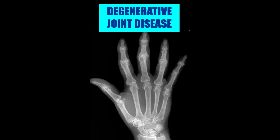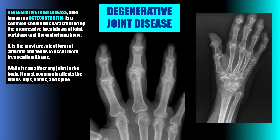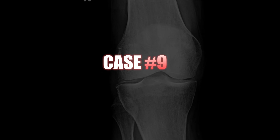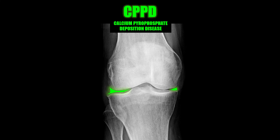Case number eight is a good example of degenerative joint disease. DJD in the hands typically involves the DIPs and PIPs while sparing the metacarpal-phalangeal joints. Degenerative joint disease, also known as osteoarthritis, is characterized by the progressive breakdown of joint cartilage and the underlying bone. It is the most prevalent form of arthritis and tends to occur more frequently with age. The linear soft tissue calcification seen in the femoral-tibial joint spaces is consistent with chondrocalcinosis, often seen with calcium pyrophosphate deposition disease.